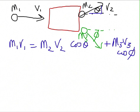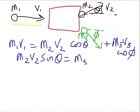That's horizontally and vertically. We have no initial vertical momentum. There's no vertical component here. So, afterwards we have m2 v2 sin theta equals m3 v3 sin phi.